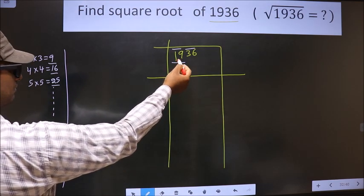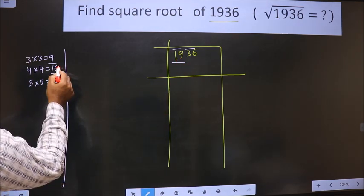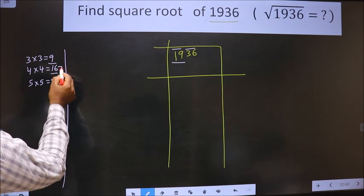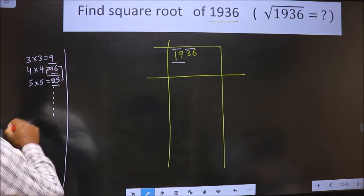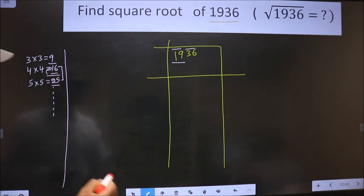And here we have 19. 19 lies between these two numbers. So we take the smaller number that is 16. 16 is 4, 4 times 4.